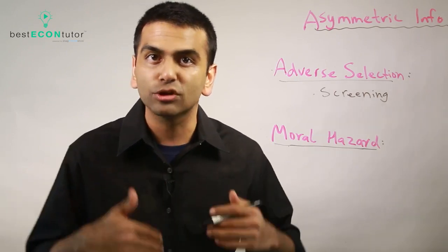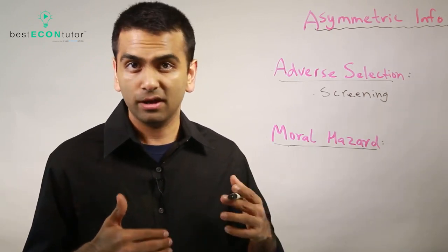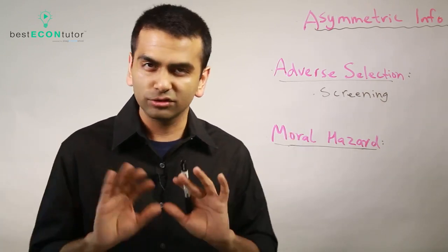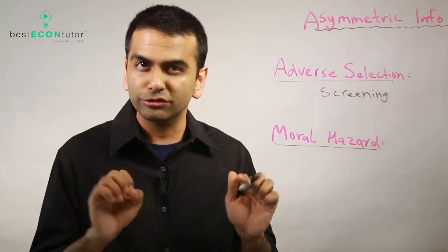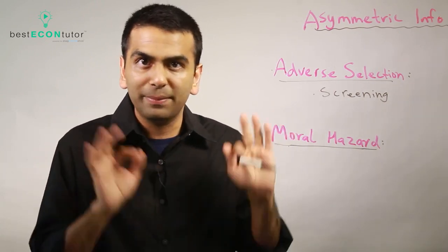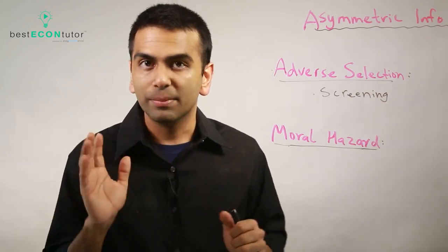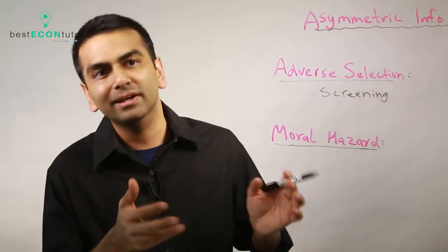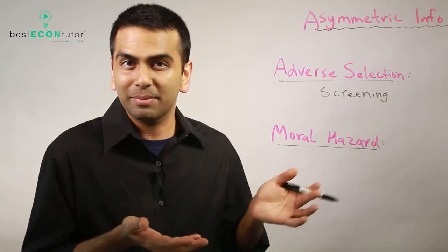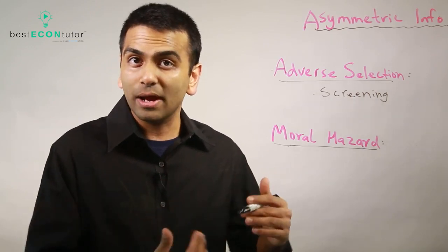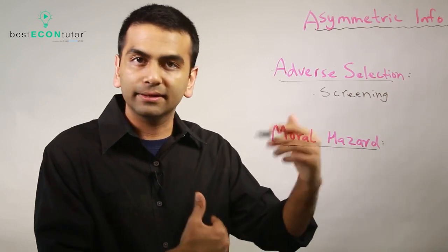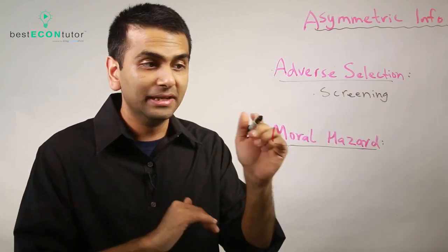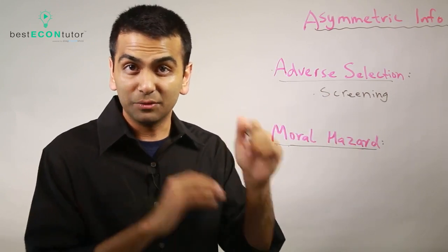To generalize: a moral hazard is whenever anybody becomes riskier just because they have insurance. It can go beyond health insurance — for example, an otherwise safe driver might drive really carefully without car insurance because they don't want to pay ten thousand dollars in repairs. But once they have car insurance, they might speed a little, thinking the insurance company will cover the damages anyway. Either way, it changes your behavior and makes you riskier. Unlike adverse selection — which is about not correctly identifying who's who — moral hazard is about insurance making everyone riskier.